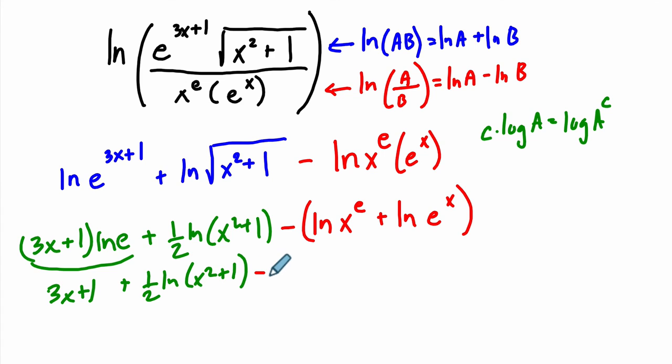And then minus, this is, bring our exponent in the front, e times the natural log of x. And then I'm going to distribute this negative sign here as well, minus x times the natural log of e. And again, the natural log of e is just one. So, I'm going to kind of cross that out. And what we're left with is this right here.